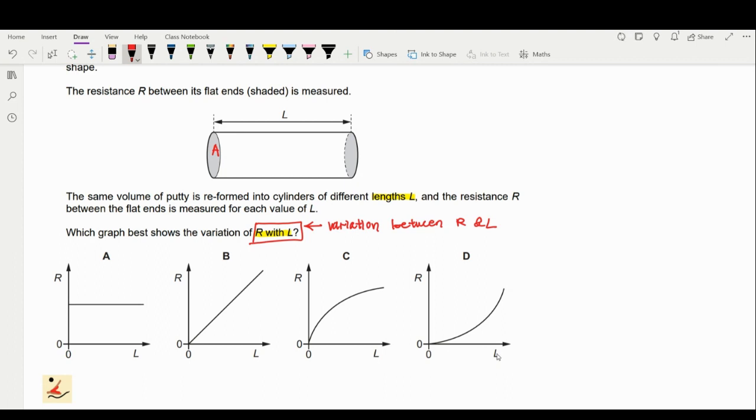First of all, there's information given in the question. The same volume - you write an equation: volume V will be equal to the area times the length, so it's cross-sectional area multiplied with the extended length L. It's A times L. We do not have the area in our graph, so we're going to remove the area in our equation later.